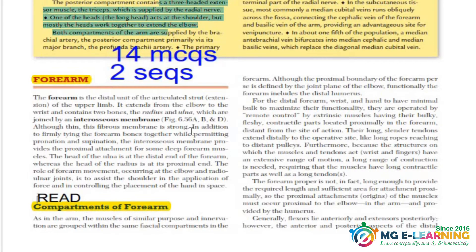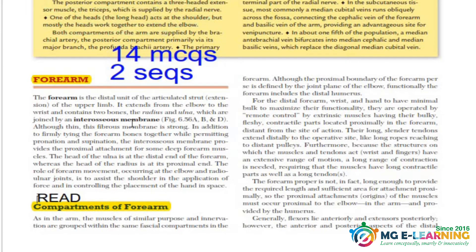Assalamualaikum, welcome to Medical Club e-learning. Today we are going to discuss the forearm from KLM 7th edition. 14 MCQs and 2 SCQs are supposed to come in the exam from the upper limb, so the forearm is very important because one SCQ is supposed to come from the forearm and the hand.